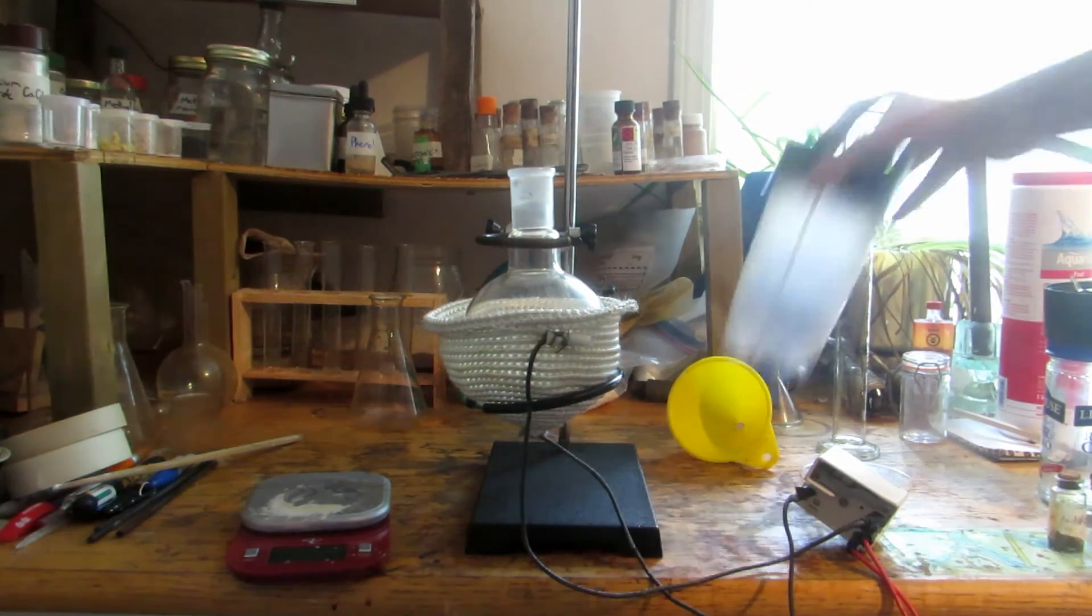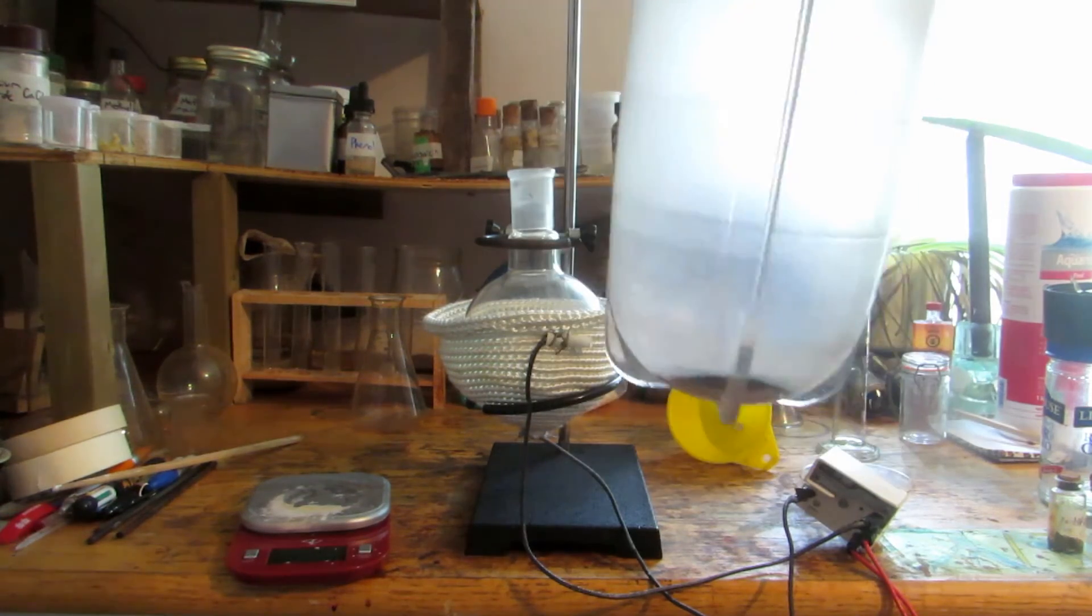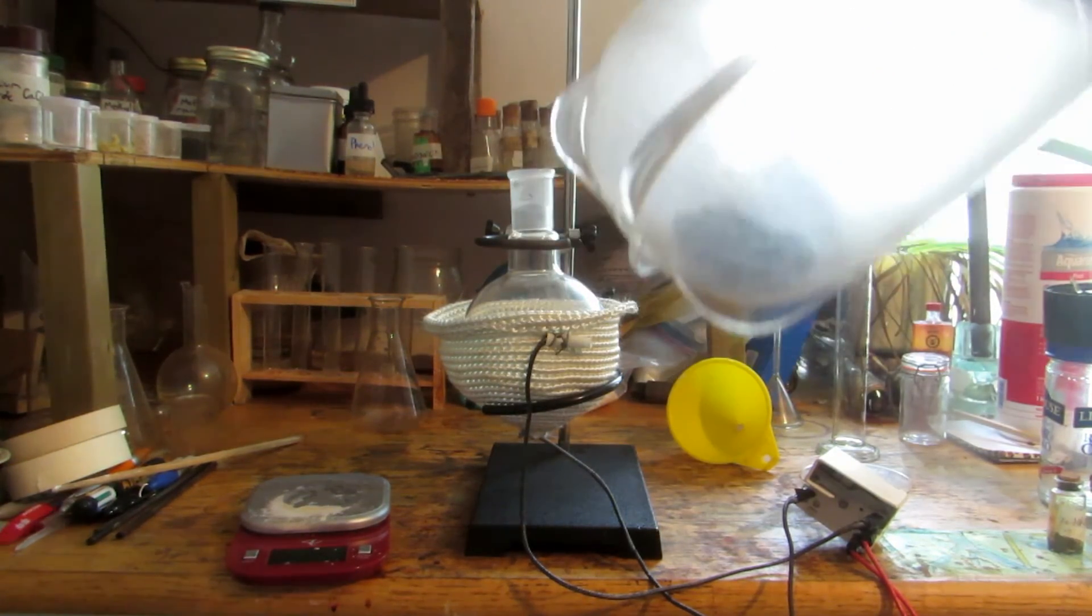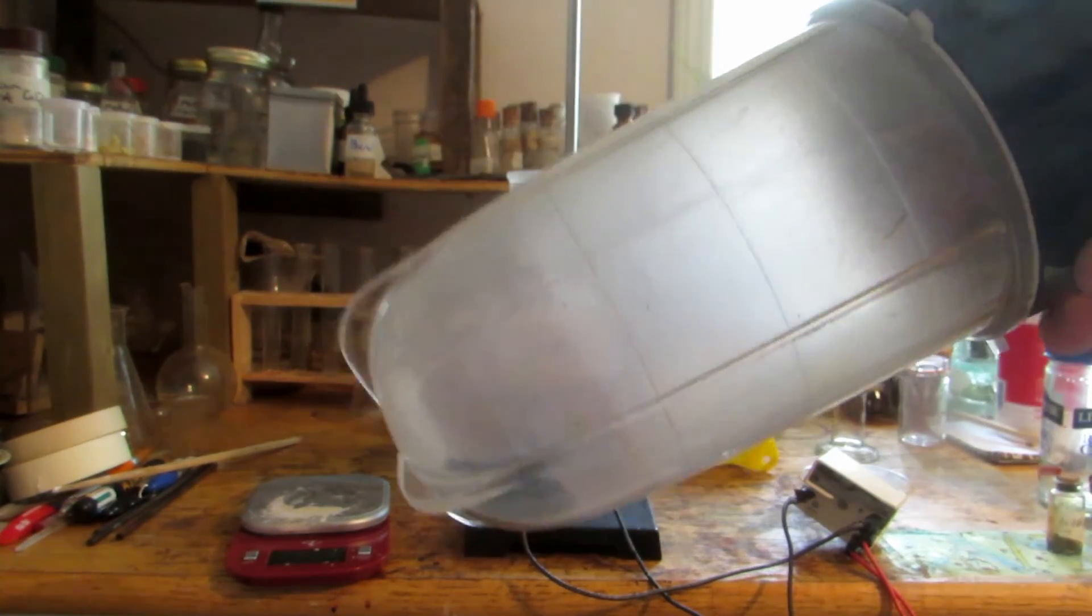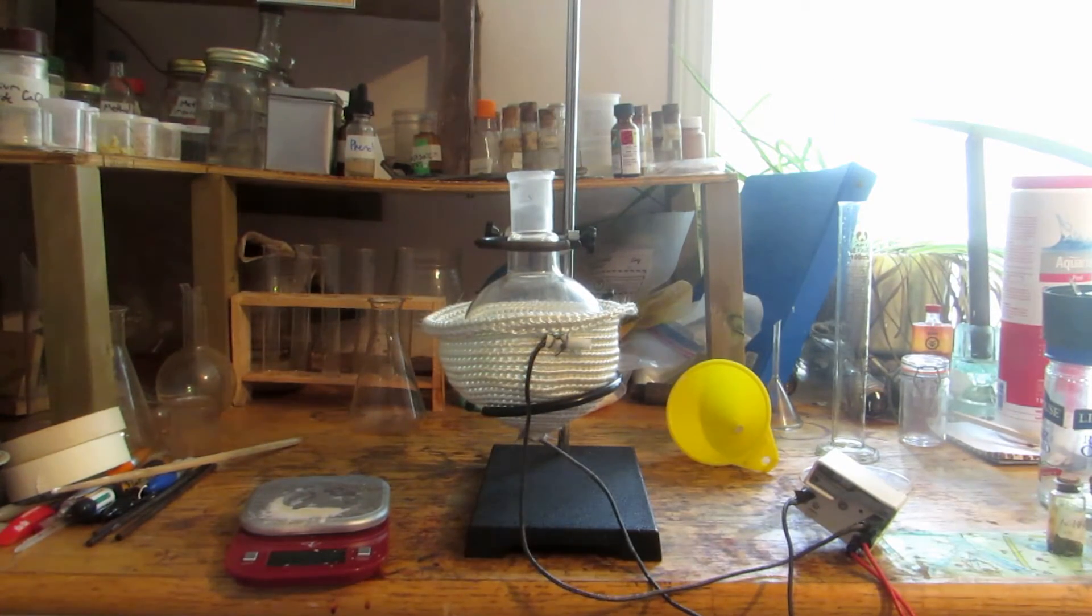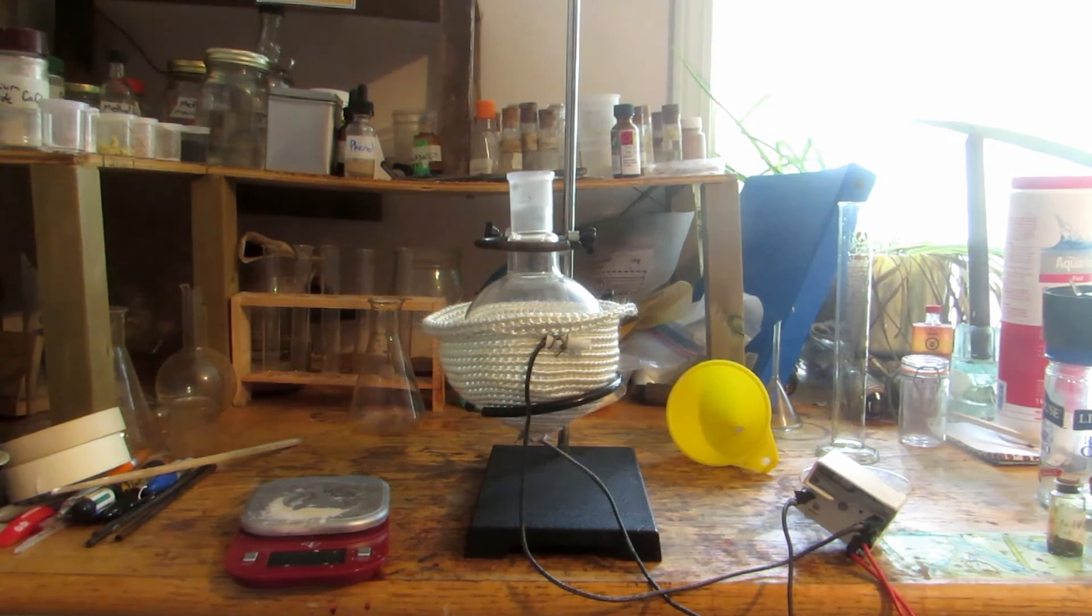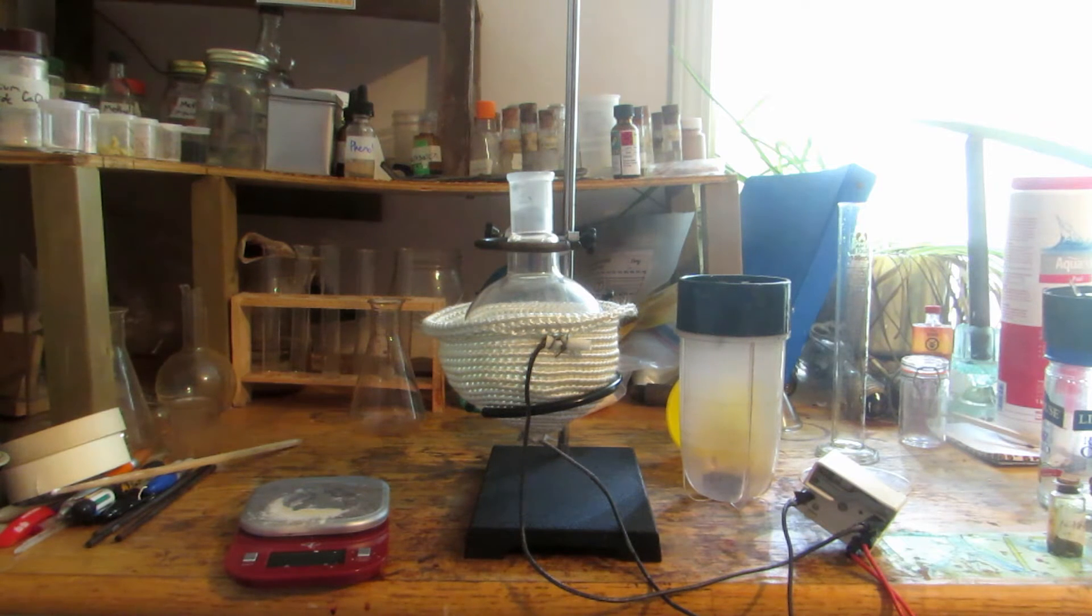I weighed out 5 grams of elemental iodine and crushed it in this magic bullet so it's in a nice fine powdery state now. The camera doesn't pick it up, but it looks a bit purple due to it slowly sublimating at room temperature. If you give a gentle sniff, you can detect the chlorine-like odor of iodine. We can now begin slowly adding this to the solution.